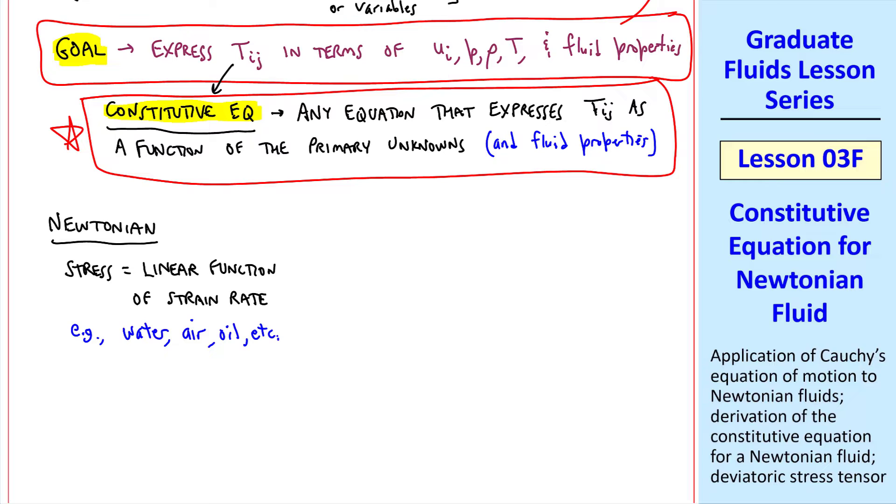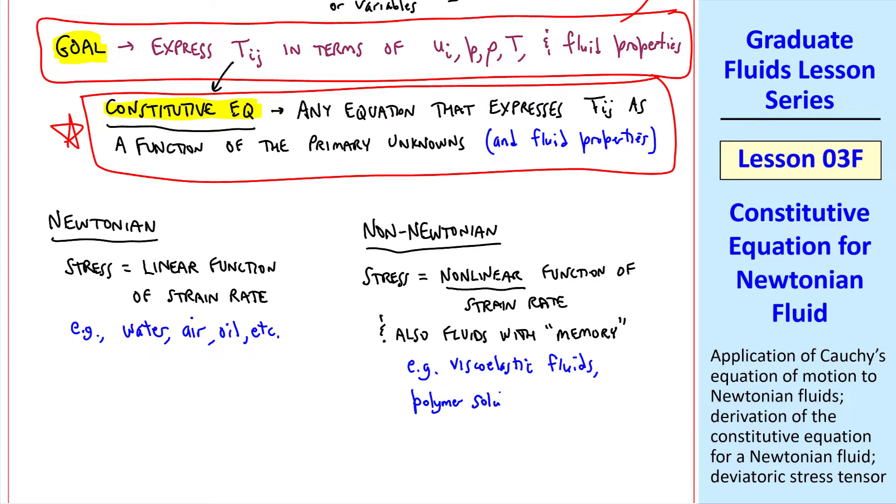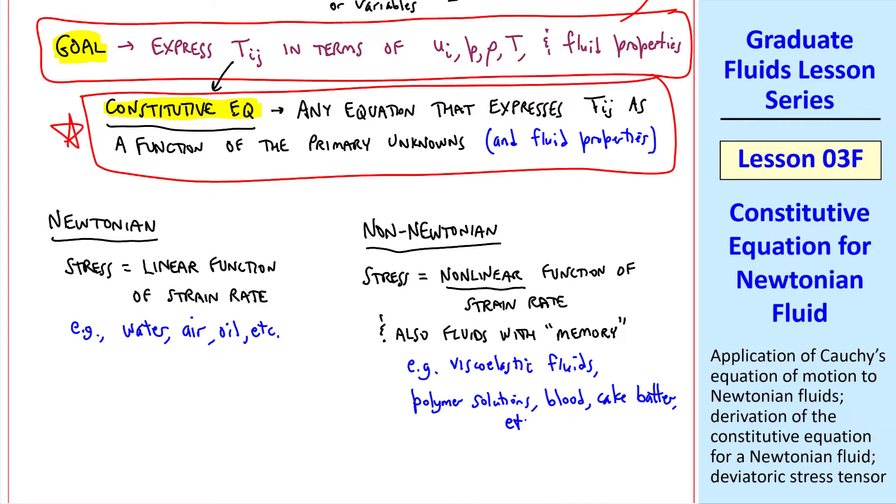Non-Newtonian fluids are fluids where the stress is a non-linear function of strain rate, and also fluids with memory, for example, viscoelastic fluids, also polymer solutions, blood, cake batter, etc.